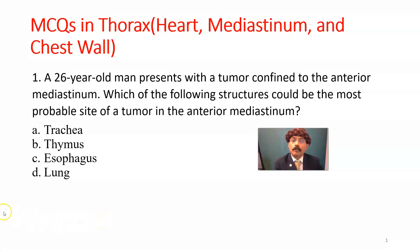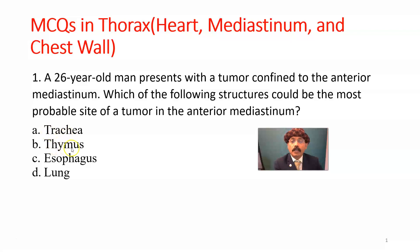Question number one: a 26-year-old man presents with a tumor confined to the anterior mediastinum. Which of the following structures could be the most probable site of a tumor in the anterior mediastinum? Choices are: A) trachea, B) thymus, C) esophagus, D) lung.